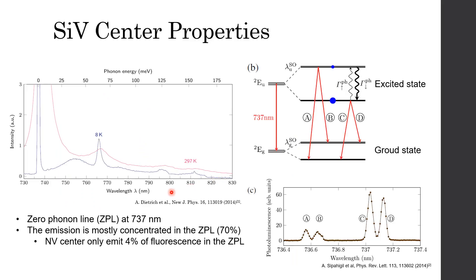Let's see the PL measurement result in the left figure. The red line and blue line show the result at room temperature and cryogenic temperature. We can observe most of the fluorescence is concentrated in a zero-phonon line at 737 nanometer, which contains 70% of the emission. Also, a phonon peak appears at 766 nanometer, which is corresponding to the oscillation of the silicon atom.